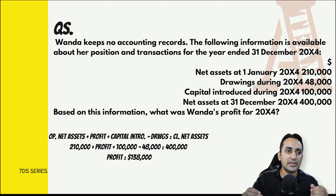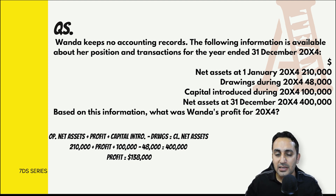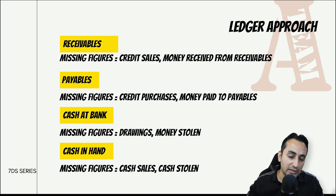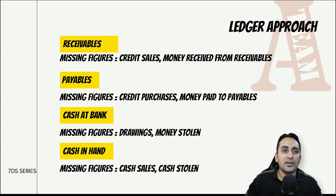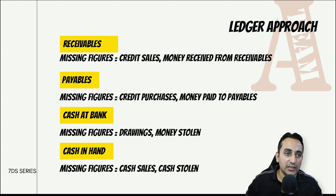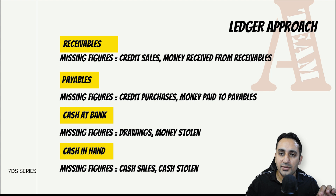इतने simple और straightforward सवाल आते हैं - कोई एक figure missing होगा और वो निकालना होता है। Ledger के अंदर भी अलग-अलग ledgers दिये जा सकते हैं जिनमें से missing figure निकालनी होती है। Receivables में credit sales या money received from customers निकालना हो सकता है। Payables में credit purchases या money paid to payables निकालना हो सकता है। Cash/bank transactions में drawings या money stolen, और cash in hand में cash sales या cash stolen निकालने को बोला जा सकता है।